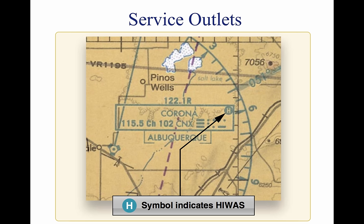The Direct User Access Terminal Service, DUATS, which is funded by the FAA, allows any pilot with a current medical certificate to access weather information and file a flight plan via computer. The Enroute Flight Advisory Service is specifically designed to provide timely en-route weather information upon pilot request. Hazardous In-Flight Weather Advisory is a national program for broadcasting hazardous weather information continuously over selected navigation aids. The broadcasts include advisories such as AIRMETs, SIGMETs, convective SIGMETs, and urgent PIREPs. These broadcasts are only a summary, and pilots should contact an FSS or EFAS for detailed information.